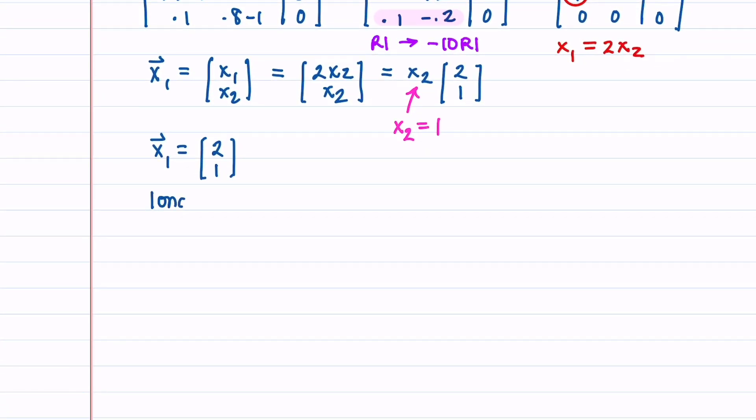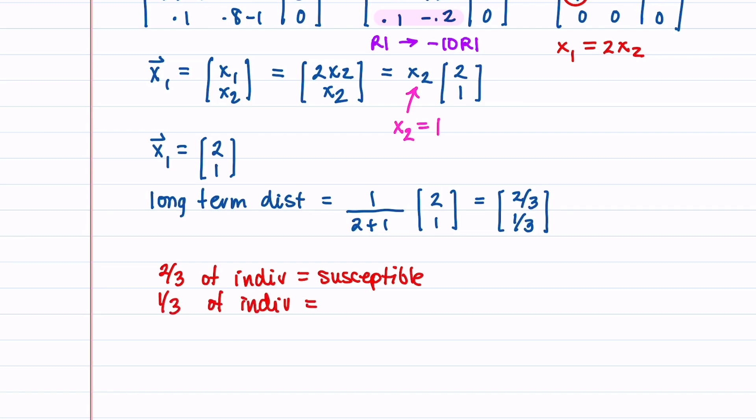Our long-term distribution is equal to 1 divided by the entries in x_1 added together, so that's 2 + 1, times x_1 [2, 1]. This gives us entries equal to 2/3 and 1/3. This tells us that 2/3 of the individuals in the long term are going to be susceptible, and 1/3 of the individuals are going to become infected.